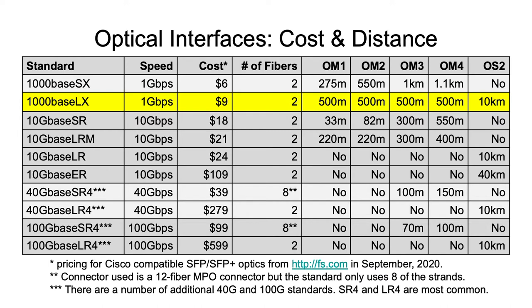For 10 gig, hopefully you're starting to become familiar with the standards. There are two multimode standards: 10GBASE-SR and 10GBASE-LRM. The SR optics are a little bit cheaper but won't support long distances — even with OM4, the most modern multimode fiber, you can only go 550 meters. That is the downside of multimode fiber: distance. The faster you go, the shorter the distance.